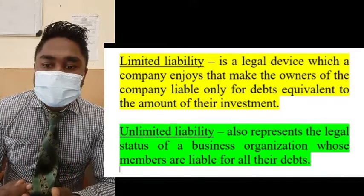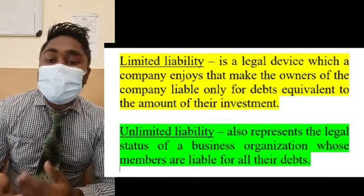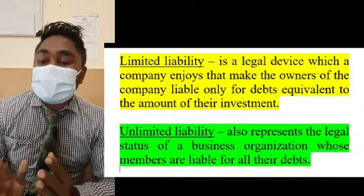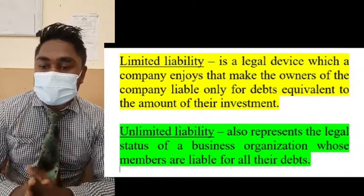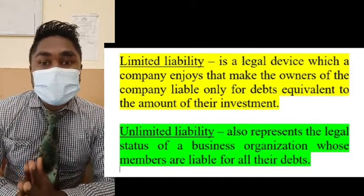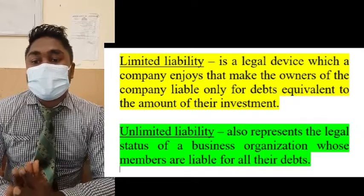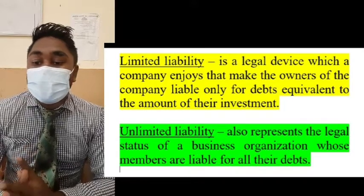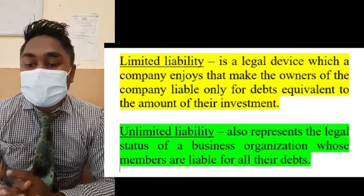Now that we have listed the different sizes of a business, let us talk about the different liabilities of a business before we go into explaining the different sizes of the business. So basically, there are two different liabilities of a business: limited liability and unlimited liability.